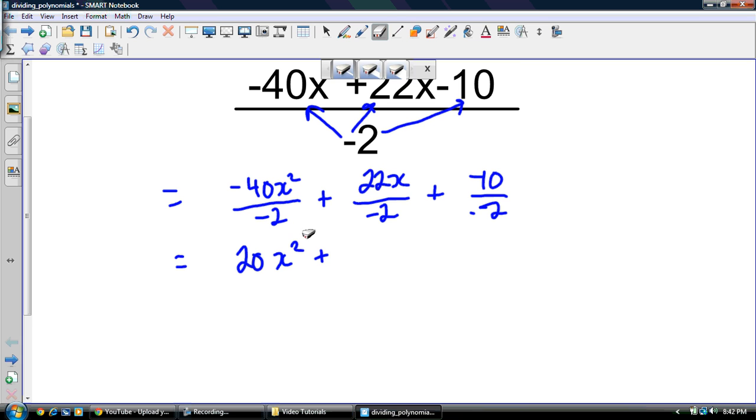The reason being is because my next step, I'm going to end up with a negative, so I'm just going to leave the subtraction sign there. So I'm going to have negative 22x divided by negative 2. That's going to be negative 11x. Then I'm going to have negative 10 divided by negative 2, which is positive 5, so plus 5. So I just divided that polynomial.